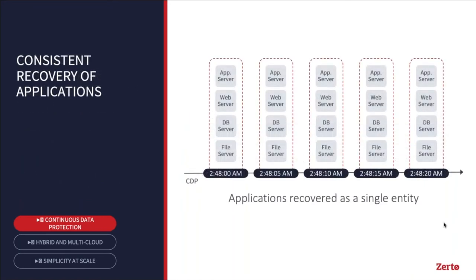On application recovery and RTO: normally with data protection you'd take a multi-tier application — say a DB server, file server, app server, and web server — and recover those components individually, then struggle to get them back in sync. What Zerto does is put everything into a logical group called a Virtual Protection Group (VPG). Every five to ten seconds we take a consistent point-in-time checkpoint across all those servers simultaneously. So when it comes to recovery, every VM in the application recovers to the same point in time — everything is time-consistent, so you don't have to worry about redo logs or rolling things back because something is out of sync.